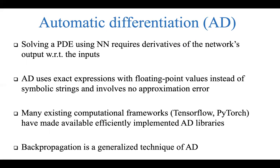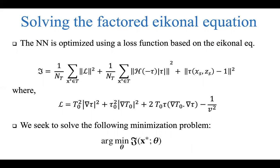To make this happen, we need derivatives of the network's output with respect to the input, and there are many ways to compute those derivatives. They can be done using symbolic differentiation or finite difference approximations. However, we use something called algorithmic or automatic differentiation. It uses exact expressions with floating point values instead of symbolic strings and involves no approximation error. Thankfully, many existing computational frameworks have made available efficiently implemented automatic differentiation libraries. Those familiar with neural network training would know backpropagation, which is a generalized technique of automatic differentiation.